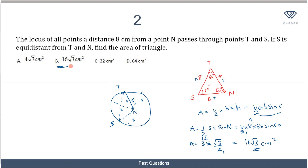So the area is 16 root 3 cm squared, and the correct option is B. To recap: we identified the locus as a circle of radius 8, noted that T and S lie on it, used the equidistance condition to show ST = SN = TN = 8, confirmed an equilateral triangle, and applied the area formula half ab sine C.